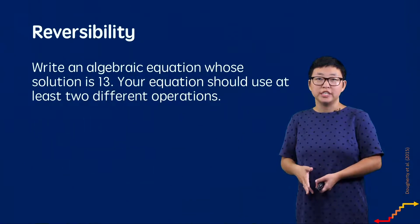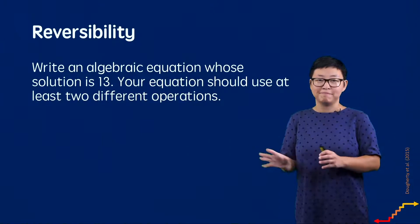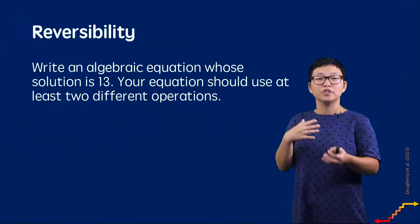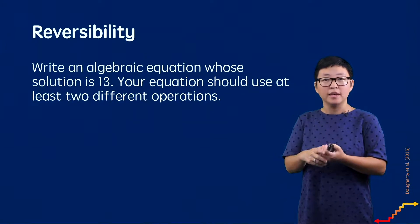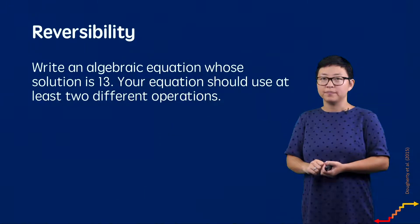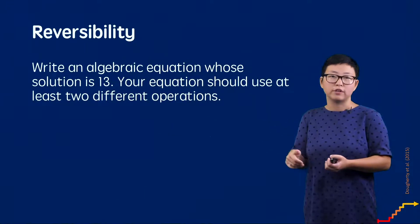The first strategy is called reversibility. In this strategy, you just reverse what you ask students to do. You reverse the kind of information you give them. So here's an example: Write an algebraic equation whose solution is 13. Your equation should use at least two different operations.